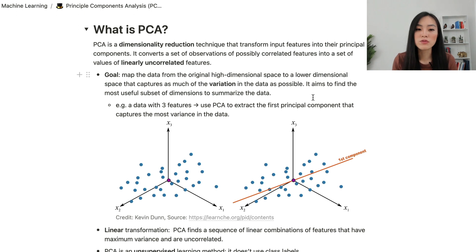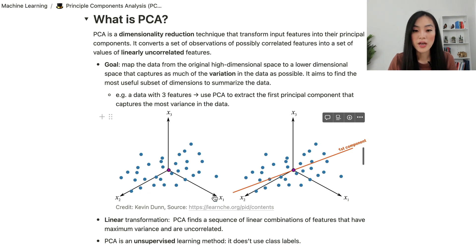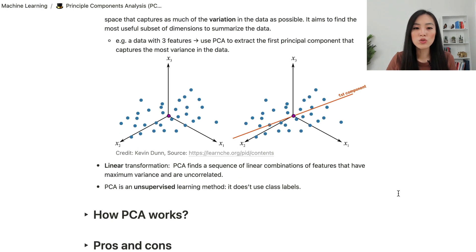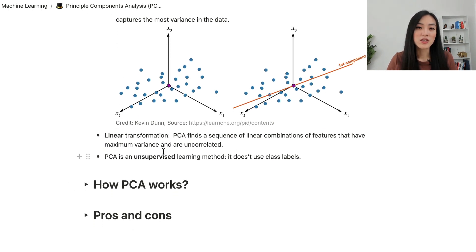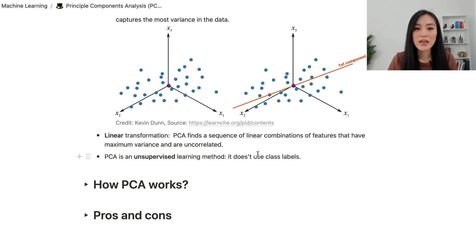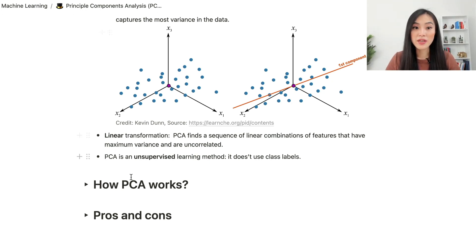PCA aims to find the most useful subset of dimensions to summarize the data. For example, given data with three features x1, x2, and x3, we can use PCA to extract the first principal component that captures the most variance. Two key facts: PCA does linear transformation, finding linear combinations of features with maximum variance that are uncorrelated; and PCA is an unsupervised learning method, meaning it does not use class labels for dimensionality reduction.